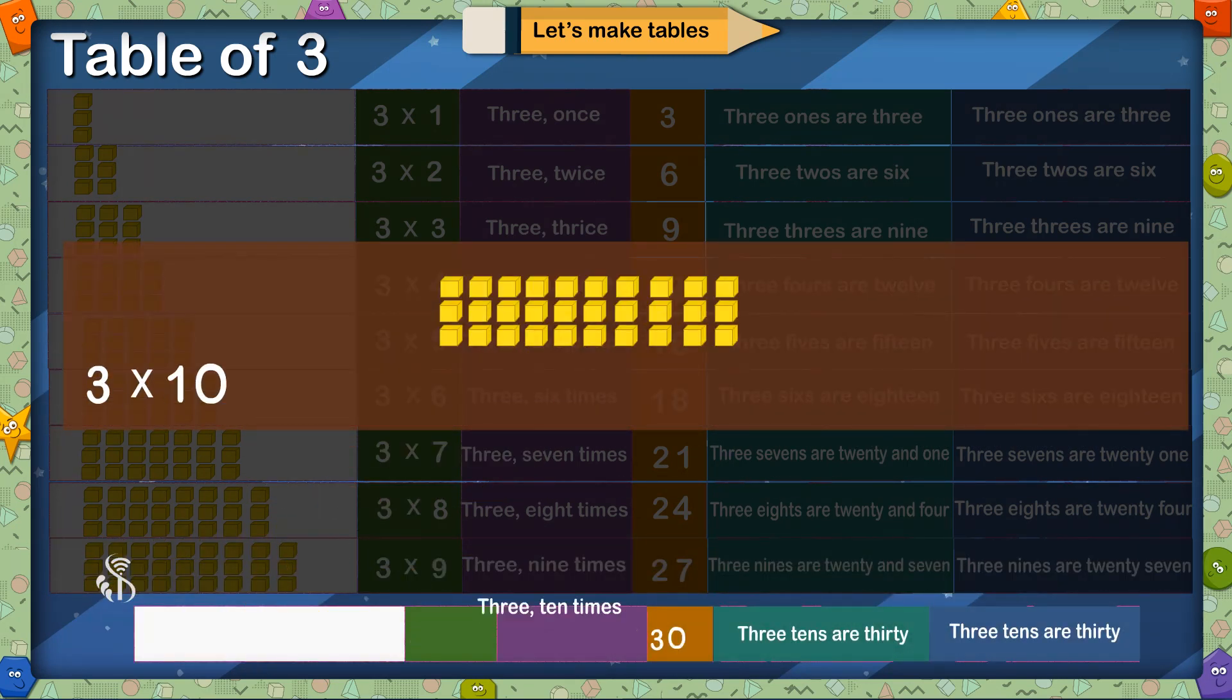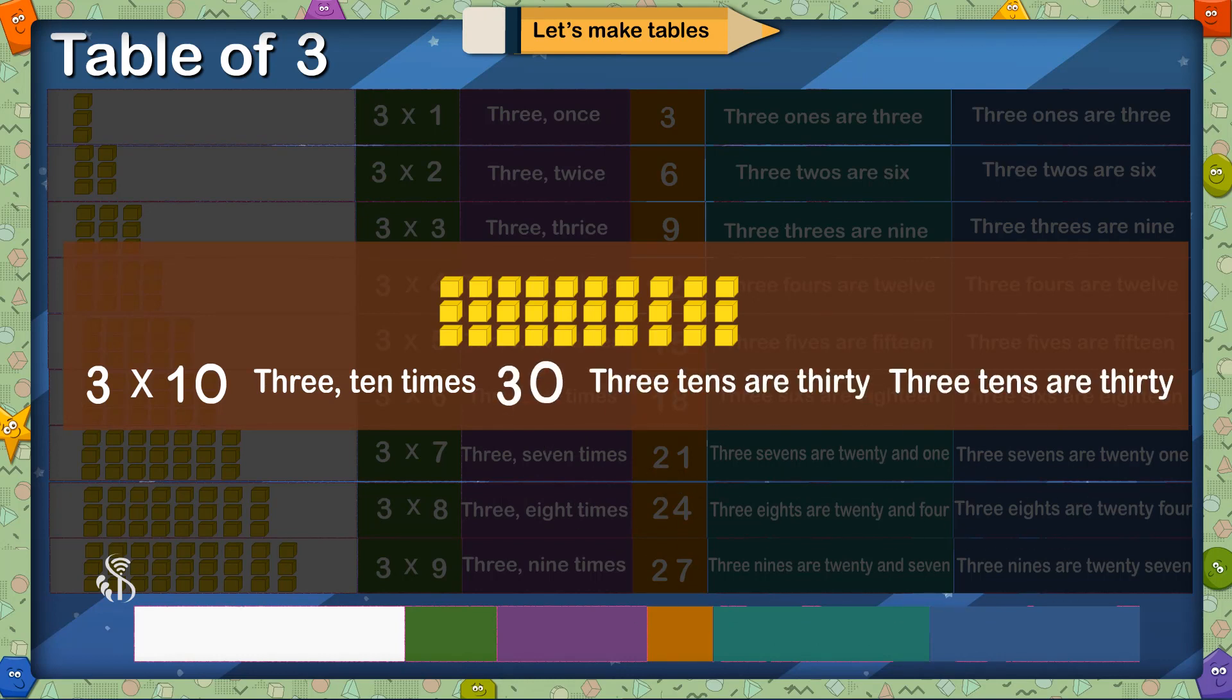3 multiplied by 10, 3 10 times is 30, 3 10s are 30.